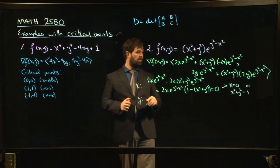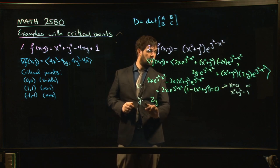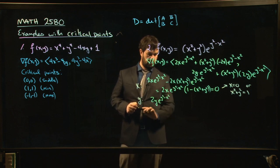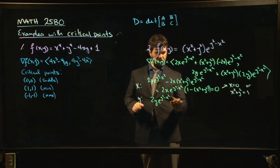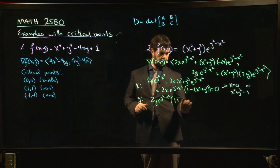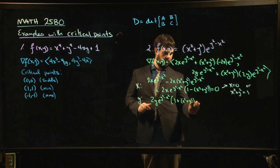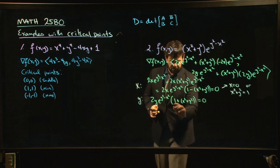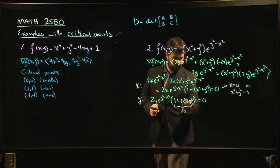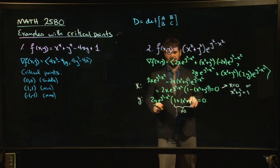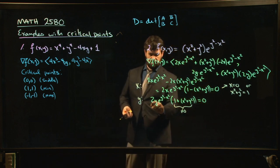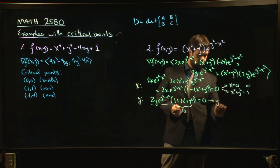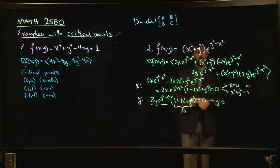For the y-component, we get the same kind of structure. Factoring out 2y and e^(y²−x²), we're left with 1 + (x²+y²). But this can never be zero: x²+y² is always ≥ 0, so 1 + (x²+y²) ≥ 1. It can never be zero, and 2y e^(y²−x²) can't be zero from those factors. So the only possibility is y = 0.